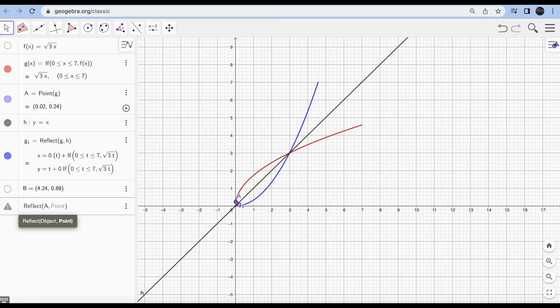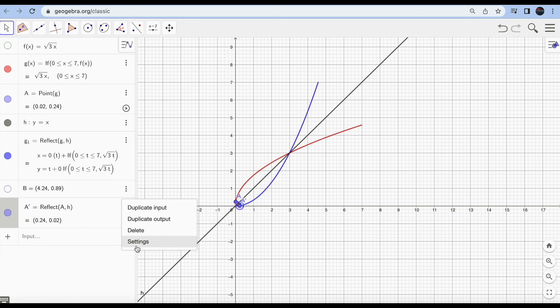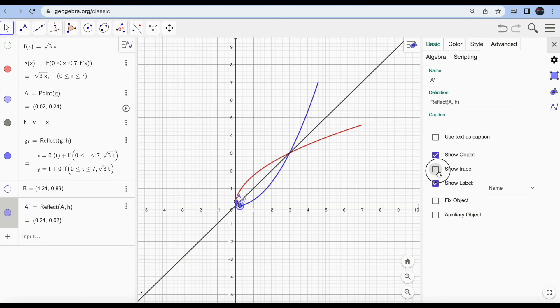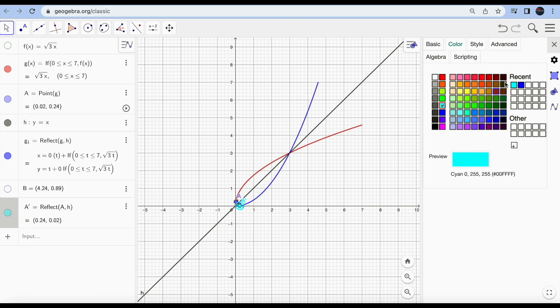Now what I'm going to do is hit here settings, show trace on A, and on A' as well, on A dash and A both. I'm going to hit show trace, so I'm going to change color for A as well. Let's just use this. That's fine.